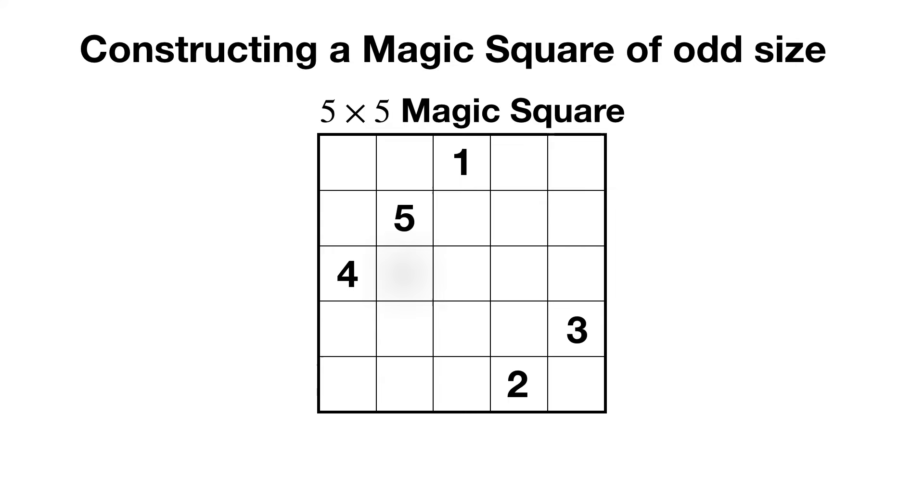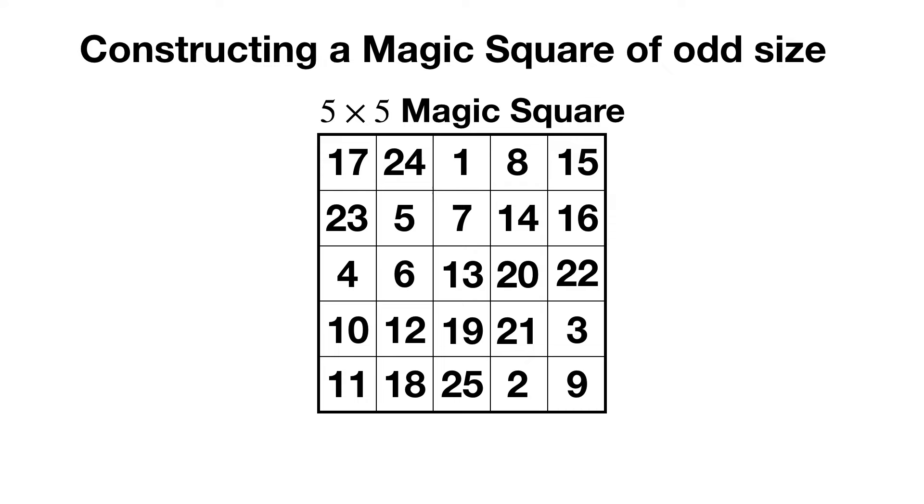We place a 1 in the upper middle square. When we travel diagonally up and to the right, we add consecutive numbers until we meet a square that's already filled. Then we move down one cell and repeat the entire process. We continue until the square is full. Voila! A 5 by 5 magic square.